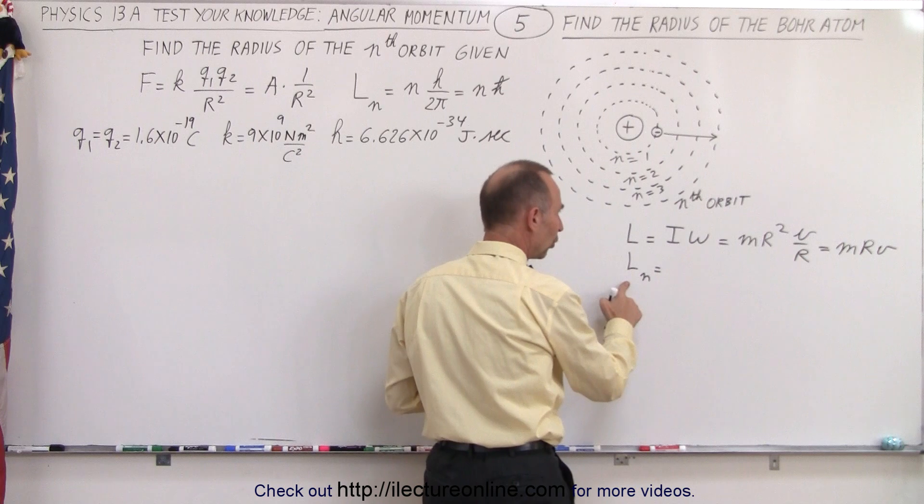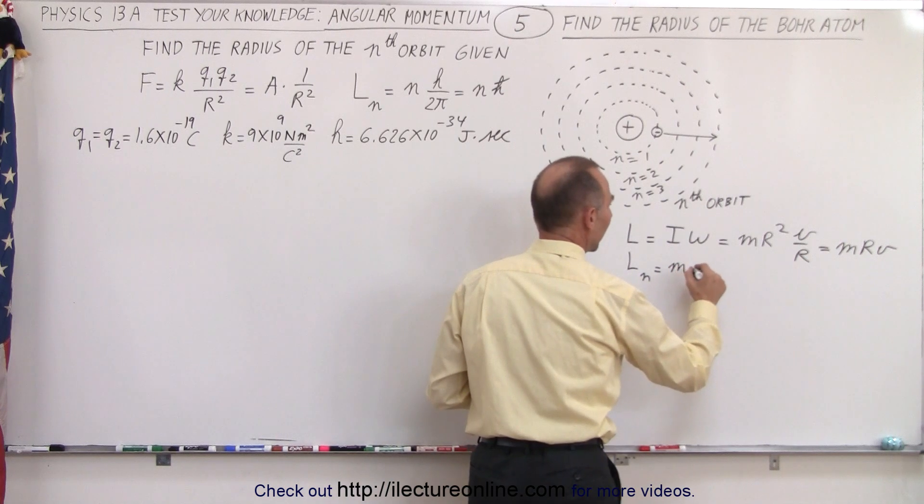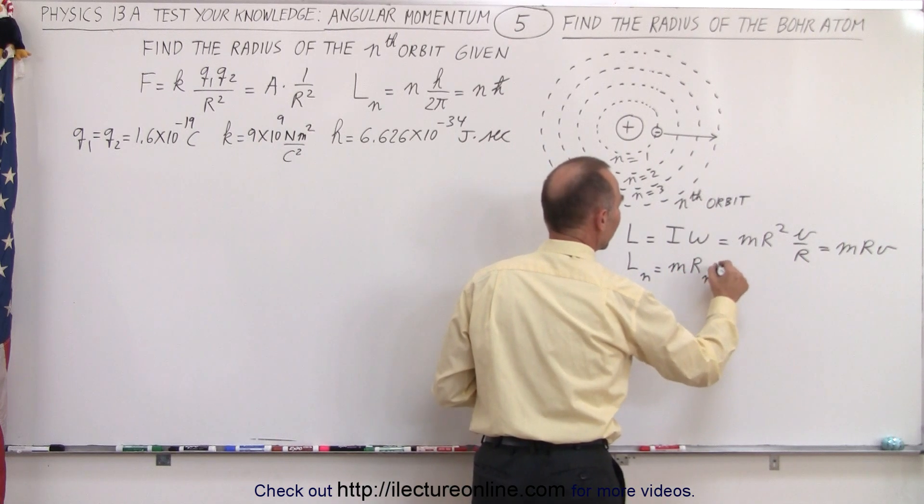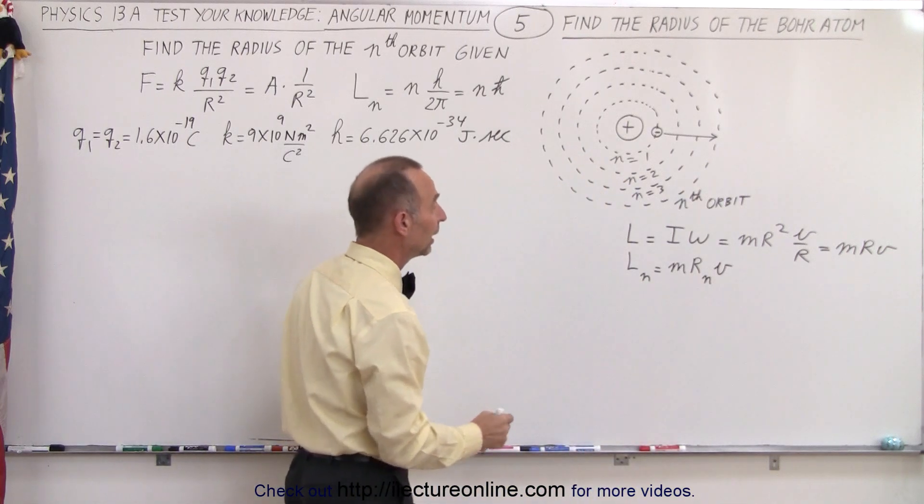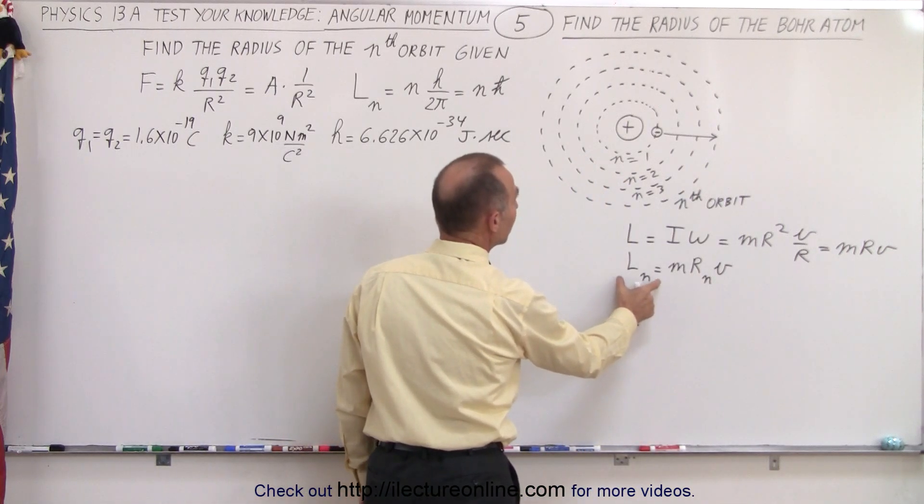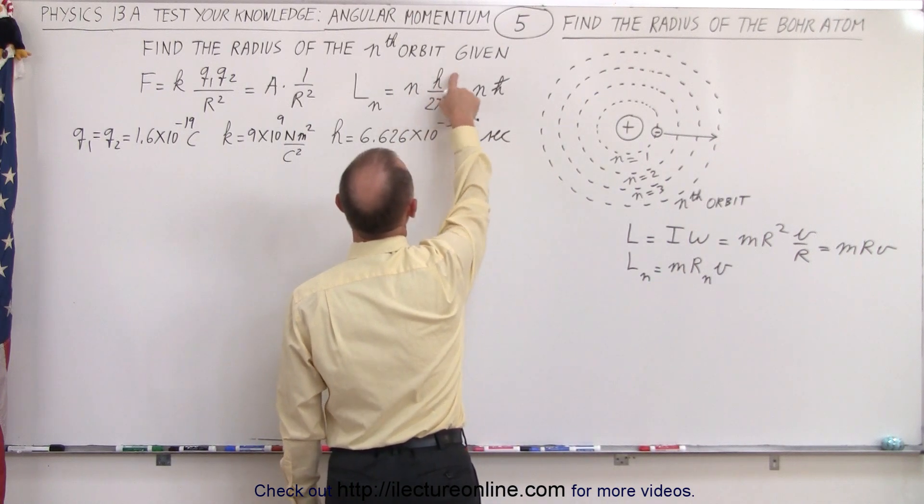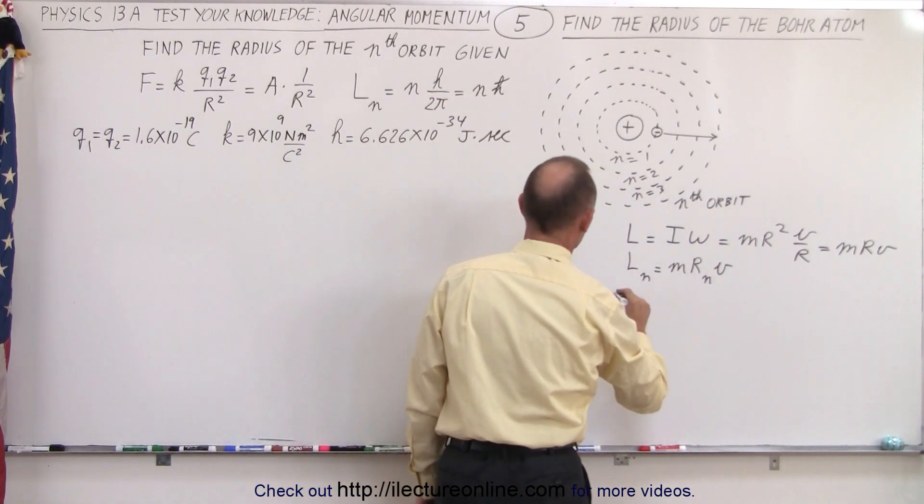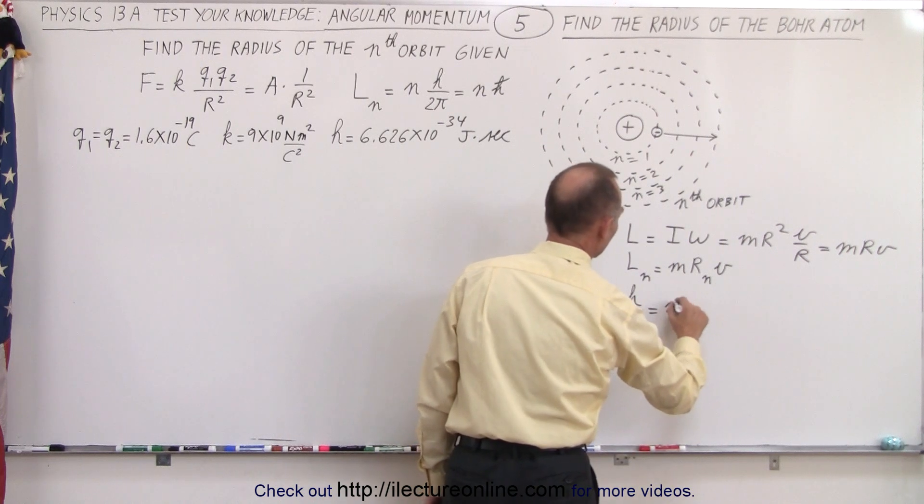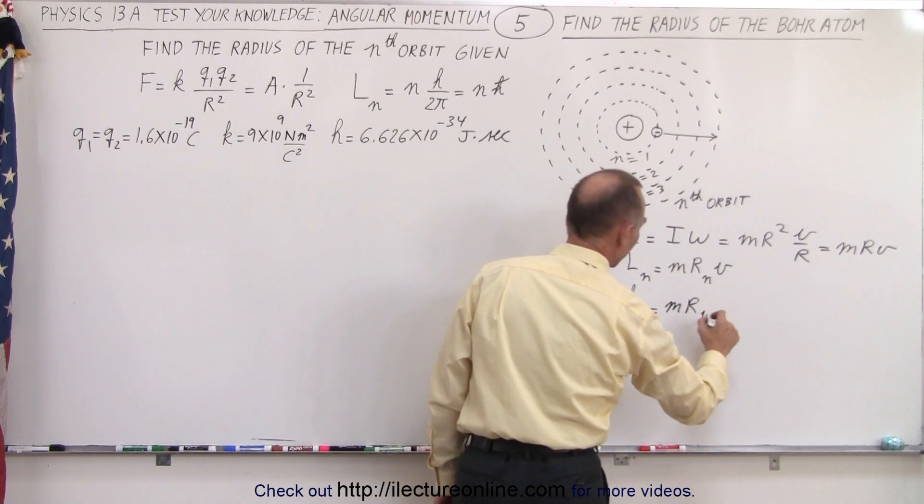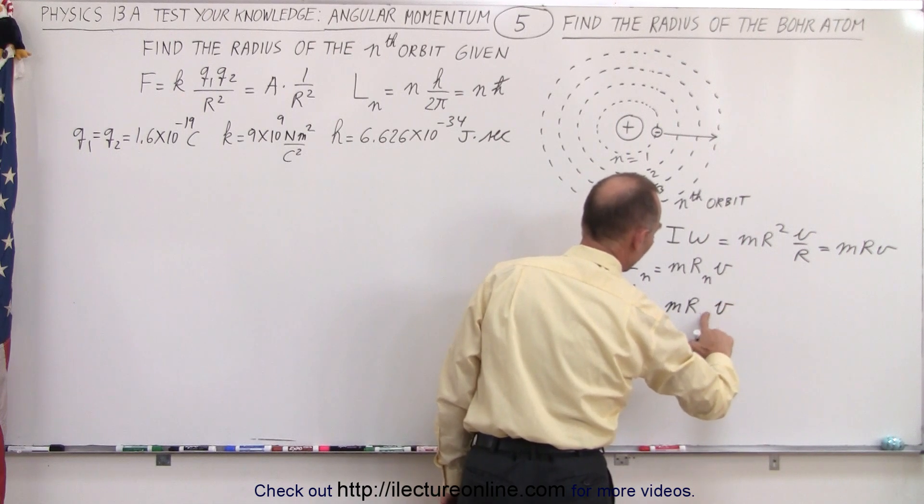So then for the nth orbit, we can say that this is equal to m times r sub n times v. It all comes down to finding what r sub n is equal to. Since we knew that the angular momentum had to be quantized, nh over 2π, we can then say that nh over 2π had to be equal to mr sub n times v sub n.